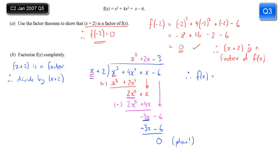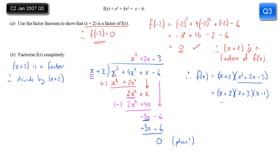Now I know that f(x) can be written as (x + 2) multiplied by the result of the division: x² + 2x − 3. To factorise completely I take this quadratic separately: I need two numbers which multiply to give minus 3 and add to give 2, so that's 3 and minus 1. So (x + 3) and (x − 1) are my two brackets, giving the fully factorised version of f(x).